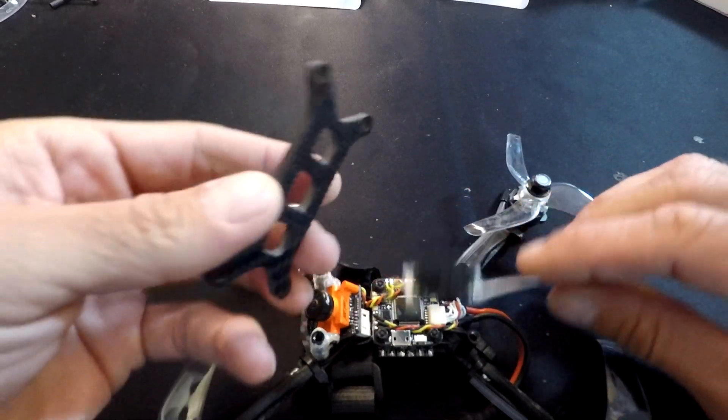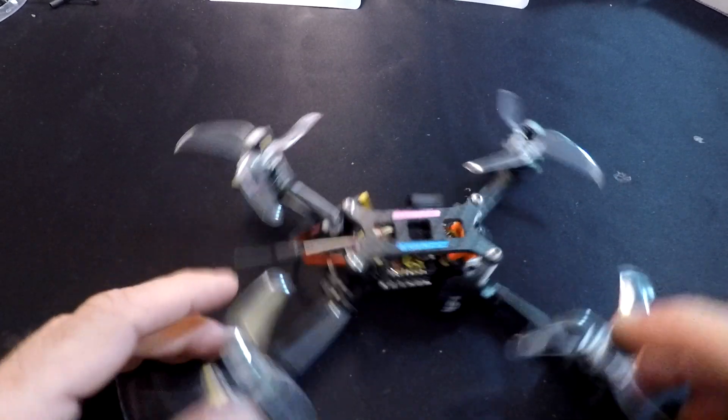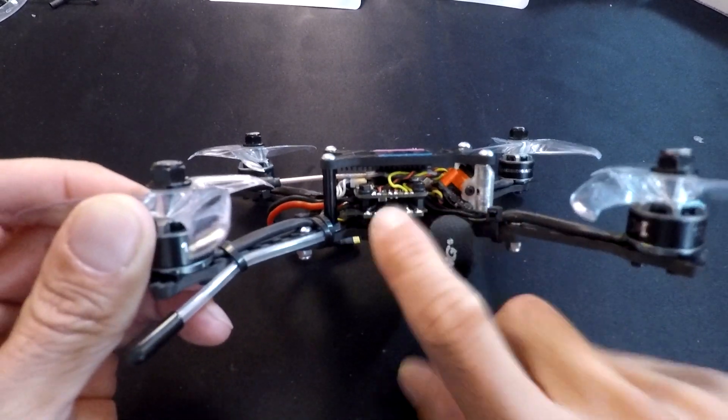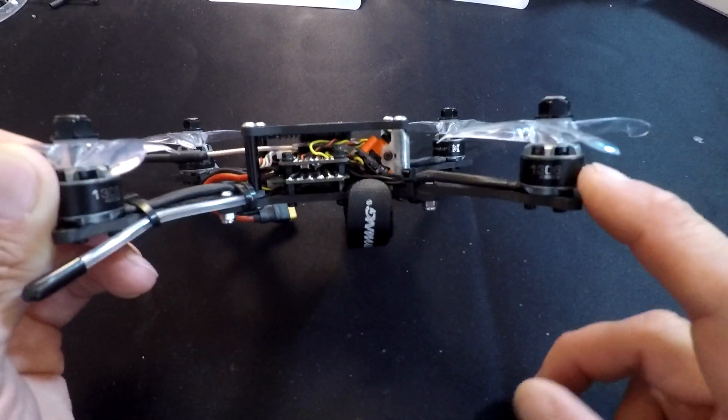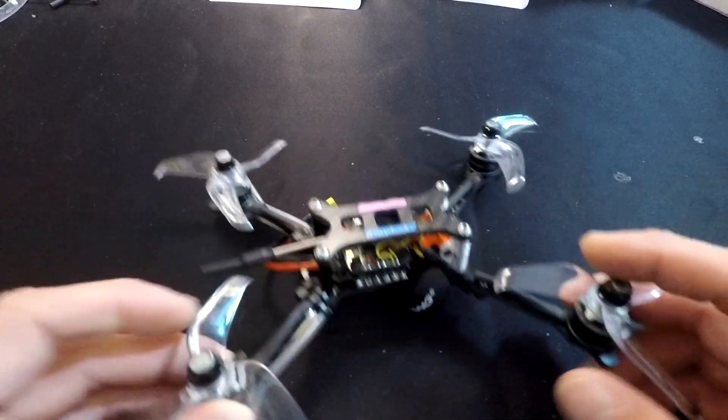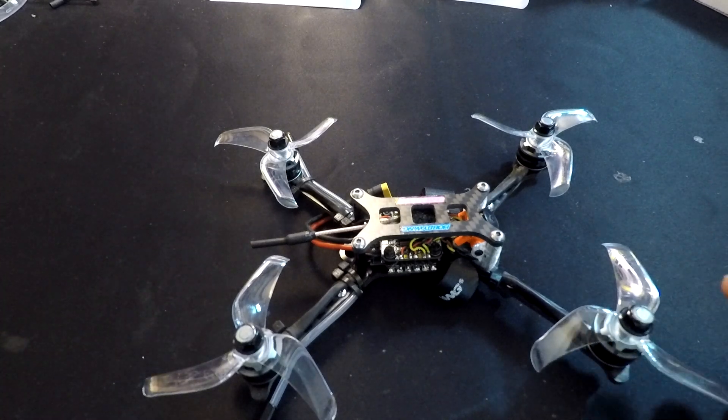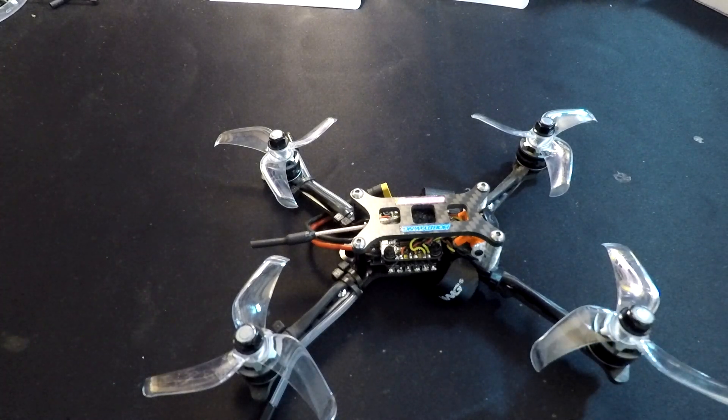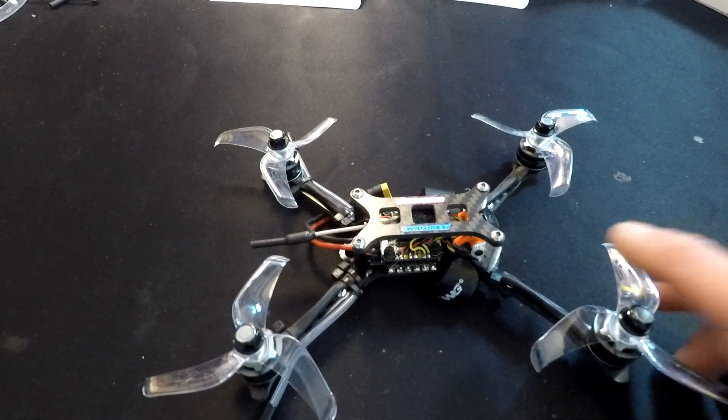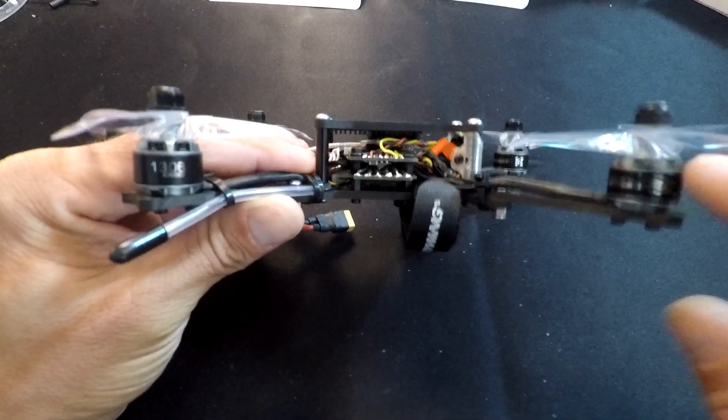There it is, the X rotor 20 by 20 nano stack with the X rotor 1306 4000 KV motors. These are great for three and four inch builds, maybe even some two inch builds. There's two different KV motors, there's a 3000 and a 4000 KV. We've been running this setup on 4S.